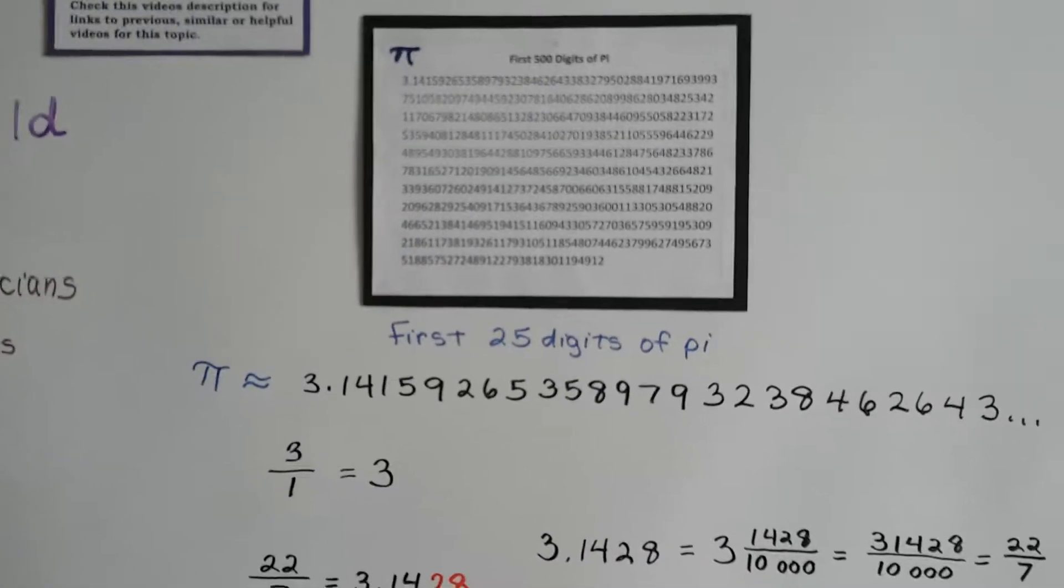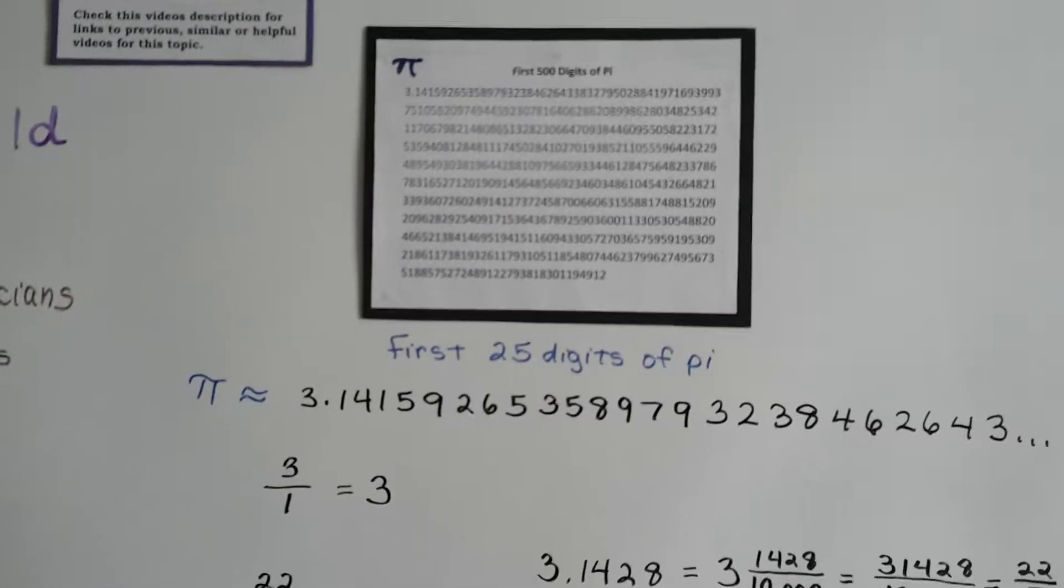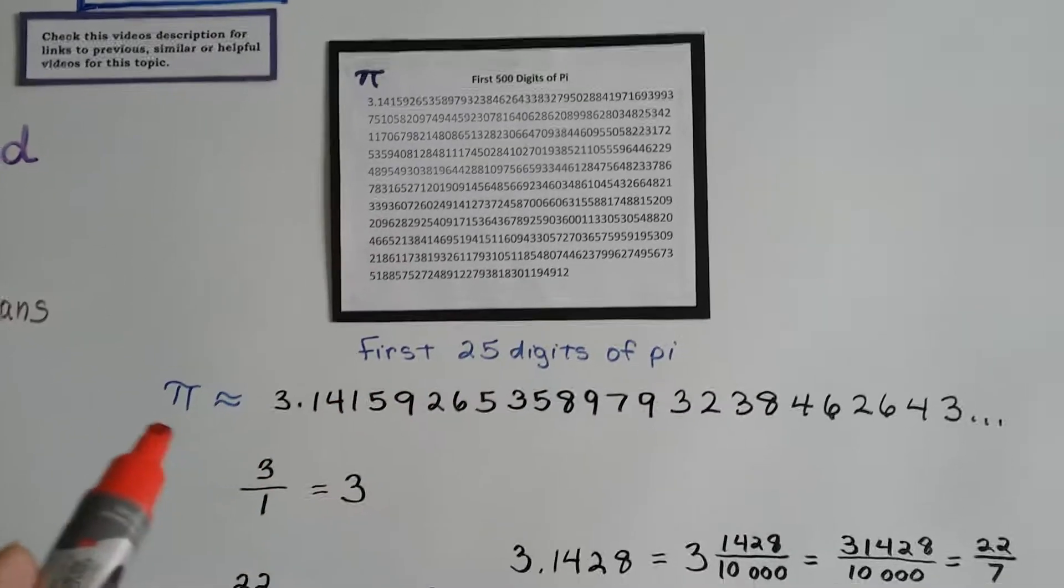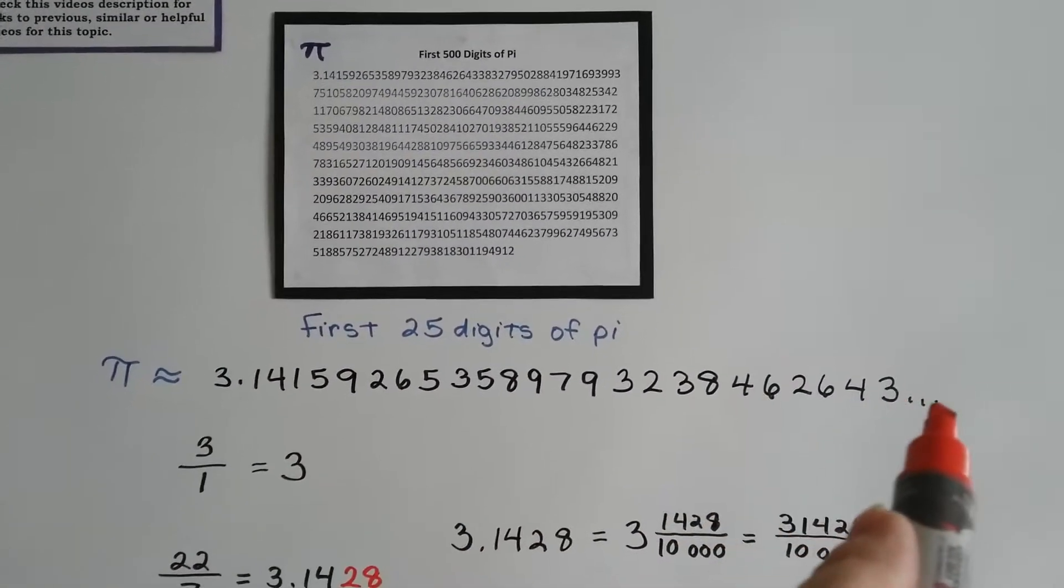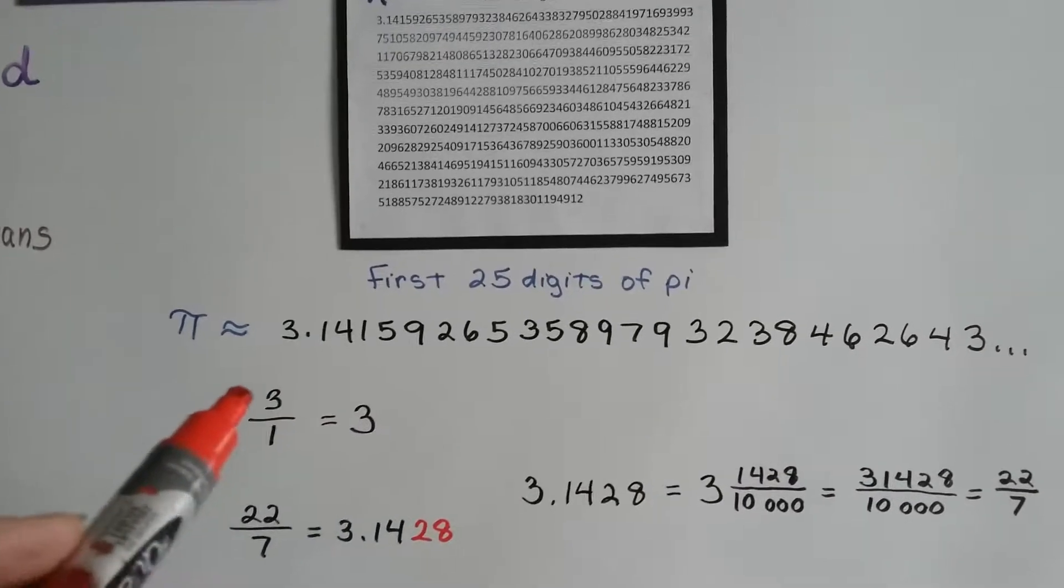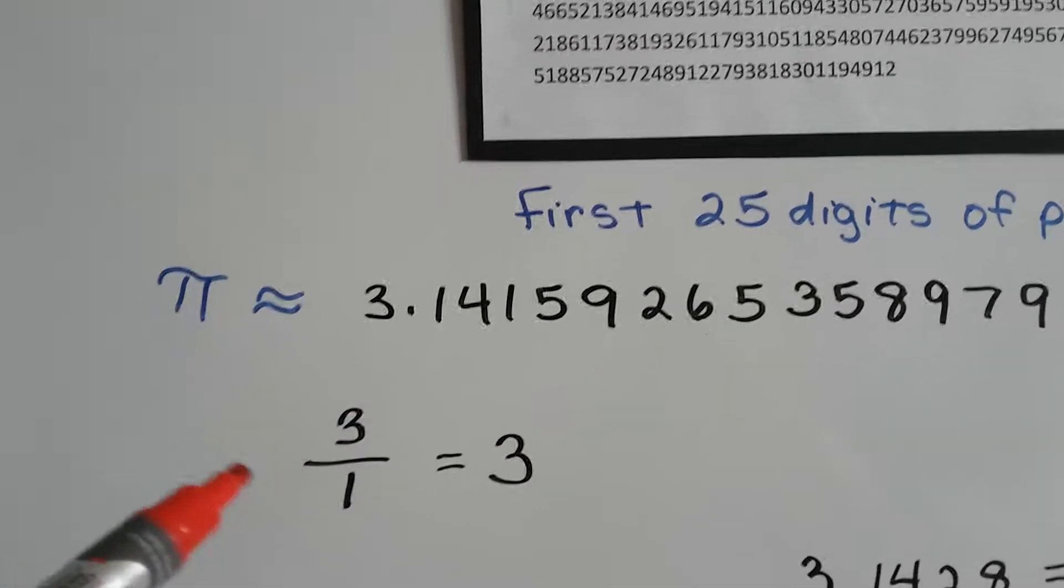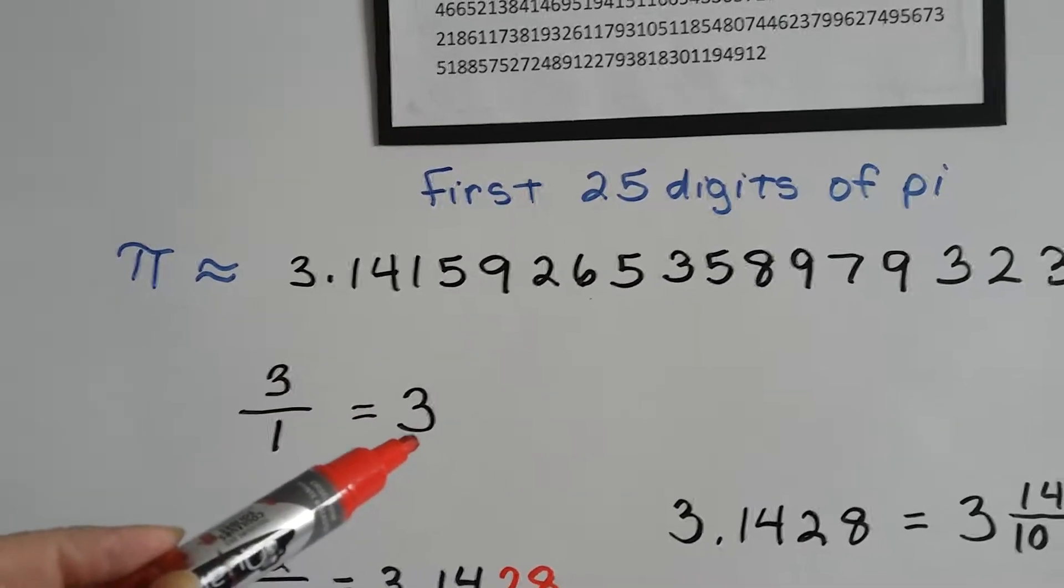So, if we look at these digits of pi and we write down the first 25 digits of pi, which are these numbers right here, we see that we have a 3 as a whole number before the decimal. And 3 over 1 is equal to 3.